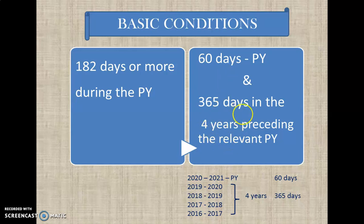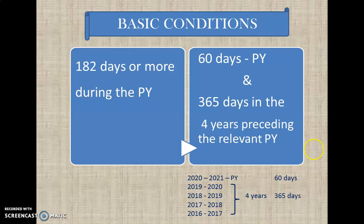The phrase '4 years preceding the relevant previous year' is important. For example, if you take 2021 as your previous year, you write down the 4 years before it: 2019-20, 2018-19, 2017-18, and 2016-17. These are the 4 years preceding the relevant previous year. So to satisfy the second basic condition, the individual must have stayed in India for 60 days in the previous year and 365 days across those 4 preceding years.